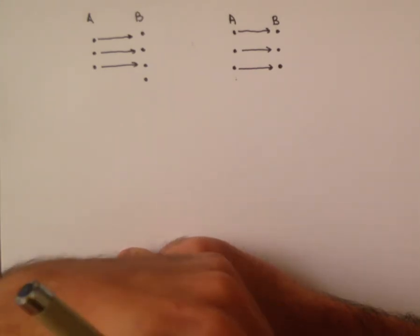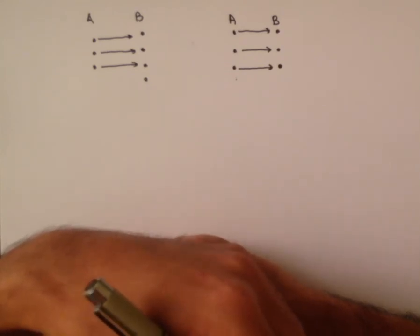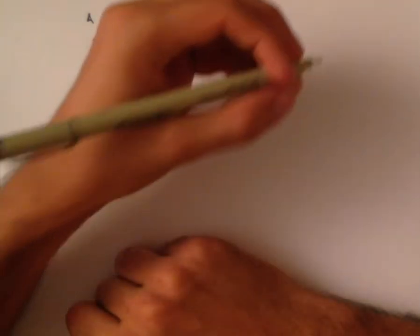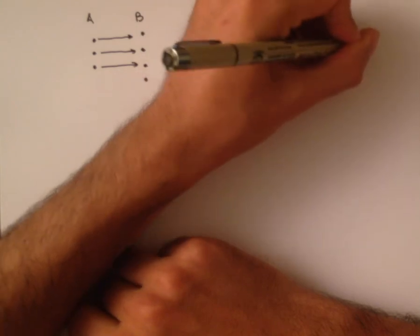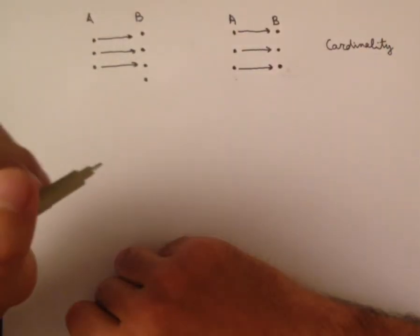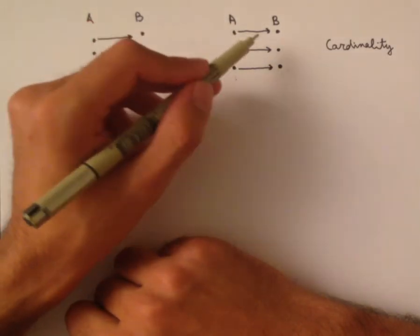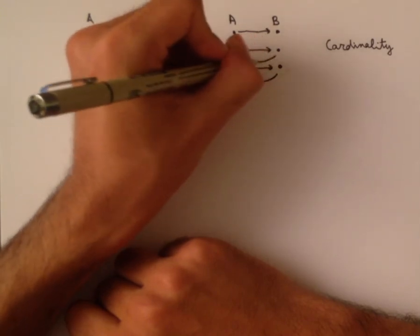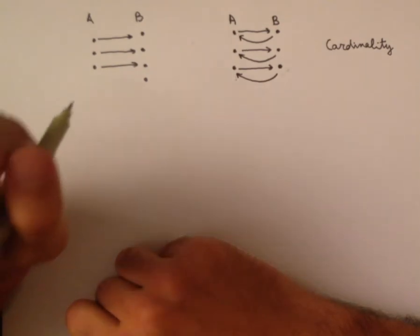Since we're going to be talking about infinite sets a lot, we're not going to use the word 'number' to talk about how many elements there are in these sets. Instead we're going to use the word 'cardinality.' Another thing worth noting is that if we have a bijection from set A to set B, we also have a bijection from set B to set A, formed simply by taking the inverse at each element.